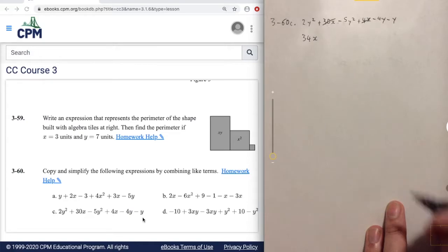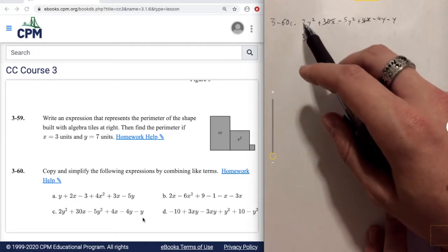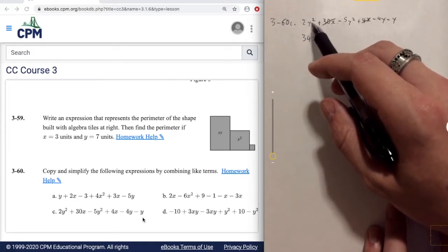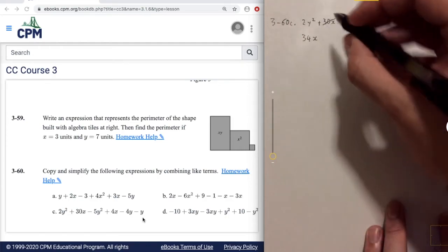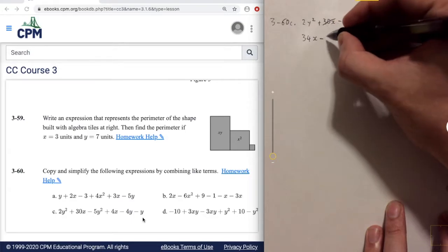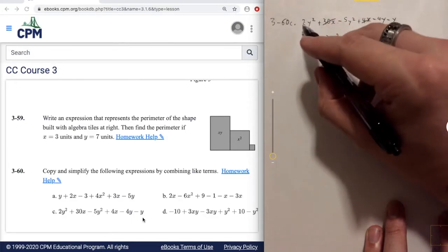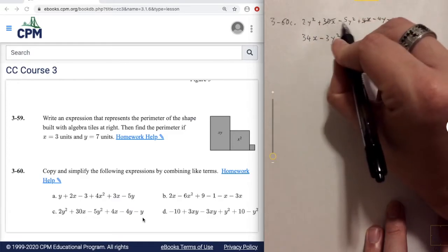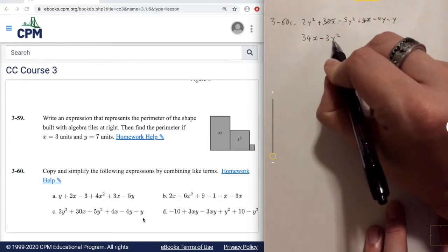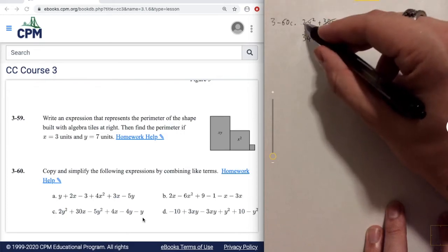Now after that we'll see if we have any y squareds and we do. So we have 2y squared here and negative 5y squared here. So we can combine those and we'll end up with negative 3y squared. We can just add these two numbers up front. So positive 2 and a negative 5 will be a negative 3y squared. We cross them out.